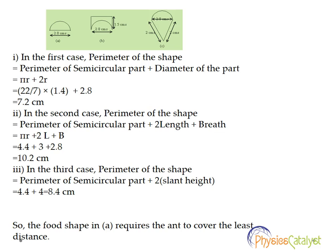So again substituting the values of those length, breadth, and radius, we get πr + 2l + b, that is equal to 4.4 + 3 + 2.8, that is equal to 10.2 centimeters.